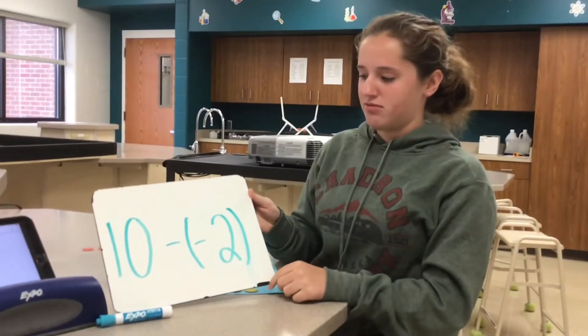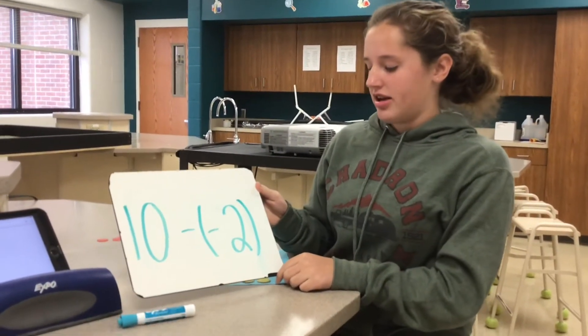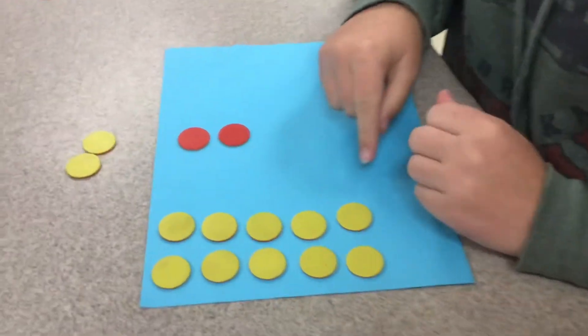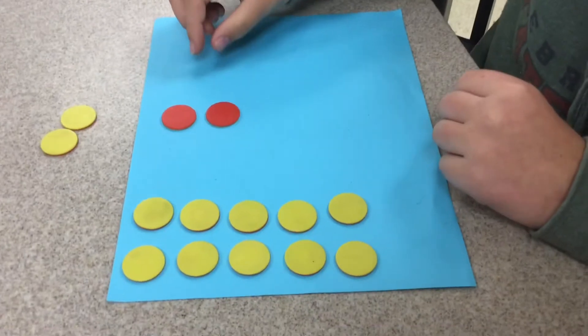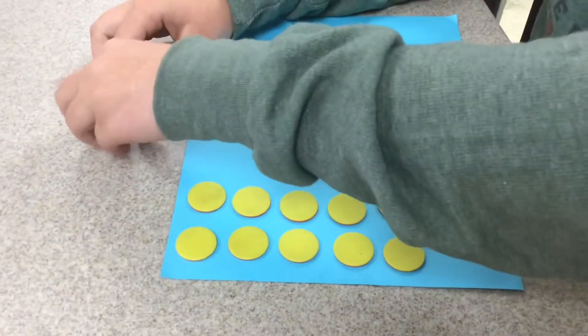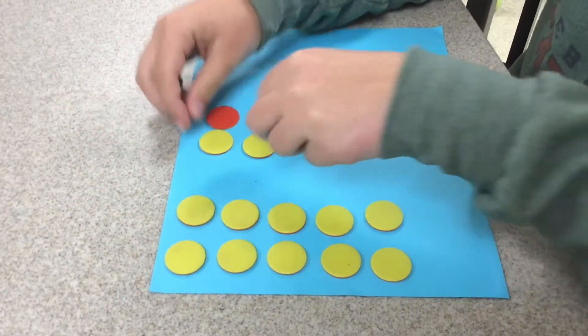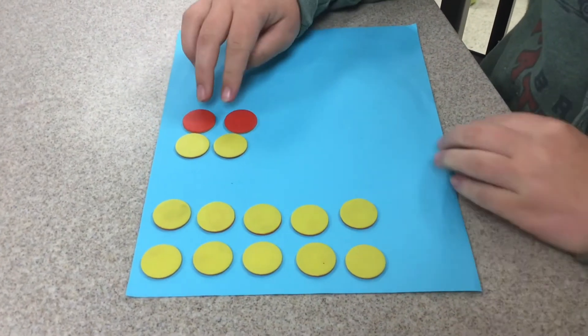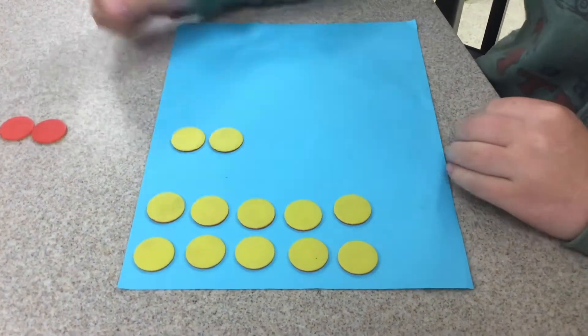The next problem is a subtraction problem, and it's 10 minus negative 2. So you have 10 yellow positive chips and 2 negative chips. You have to make pairs of zero with the negatives, so you make those pairs. And then it's minus negative 2, so you take the two negatives away, and that leaves you with positive 12.